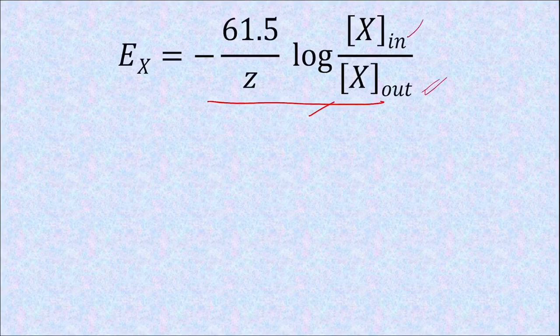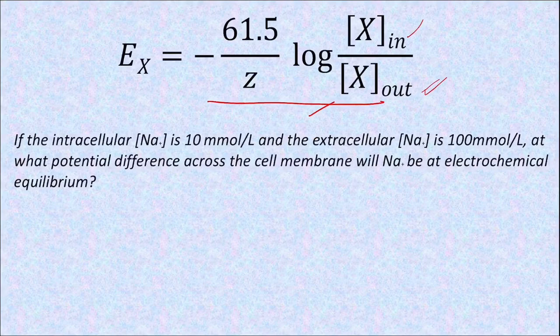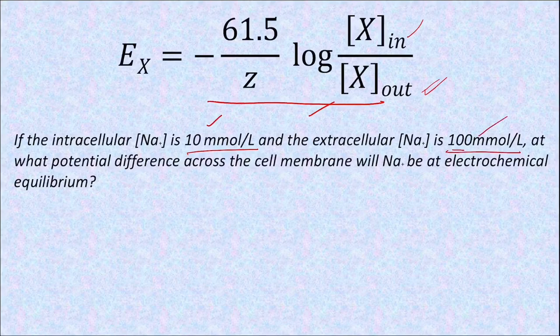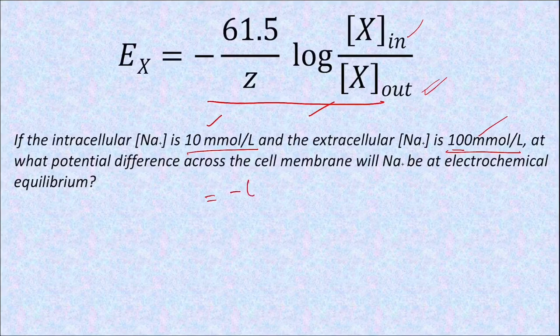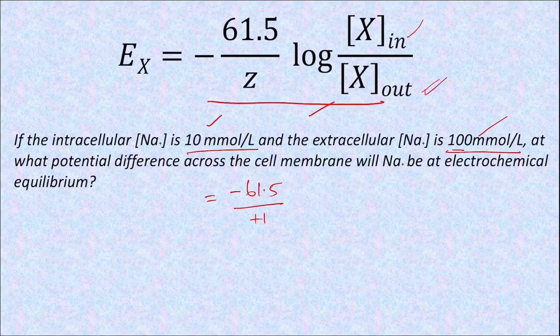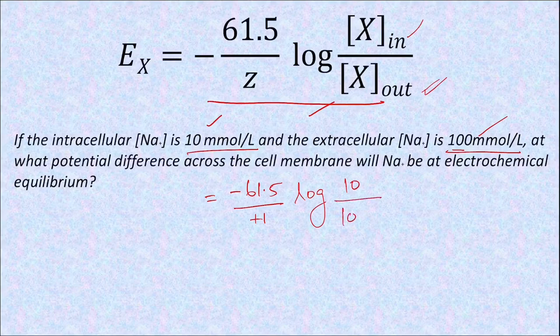Let's use this equation to calculate a Nernst potential. The intracellular sodium is 10 millimoles and extracellular is 100 millimoles. What is the Nernst potential? So let's enter these values: minus 61.5 divided by the valence of sodium, which is plus 1, times log of concentration inside by outside, 10 by 100 millimoles.